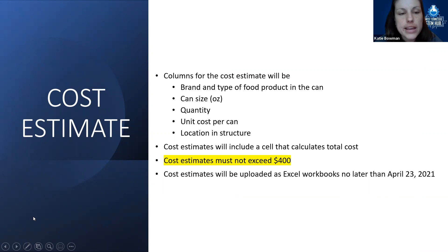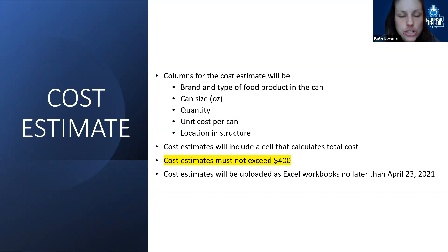This year we're adding a cost estimate bracket. To complete this portion of the design competition, you will submit an Excel spreadsheet workbook with columns for brand and type of food product in the can, can size, quantity, unit cost per can, and location in structure. Cost estimates will include a cell that calculates the total cost, and the total cost of the structure must not exceed $400. Cost estimates will be uploaded as Excel workbooks no later than April 23rd, 2021.